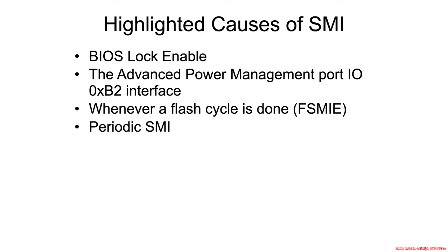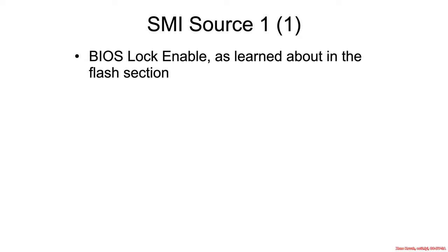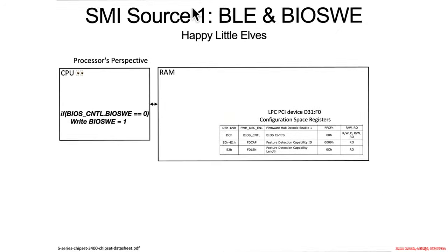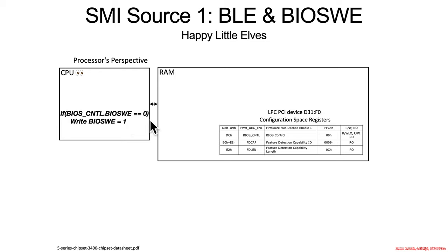Out of all those different SMI possibilities, let's look at this first SMI source, which should be familiar to us. It was the use of BIOS Lock Enable and BIOS Write Enable. If the CPU sees that BIOS Control BIOS Write Enable is set to zero, then it's going to write it to become BIOS Write Enable equal to one.